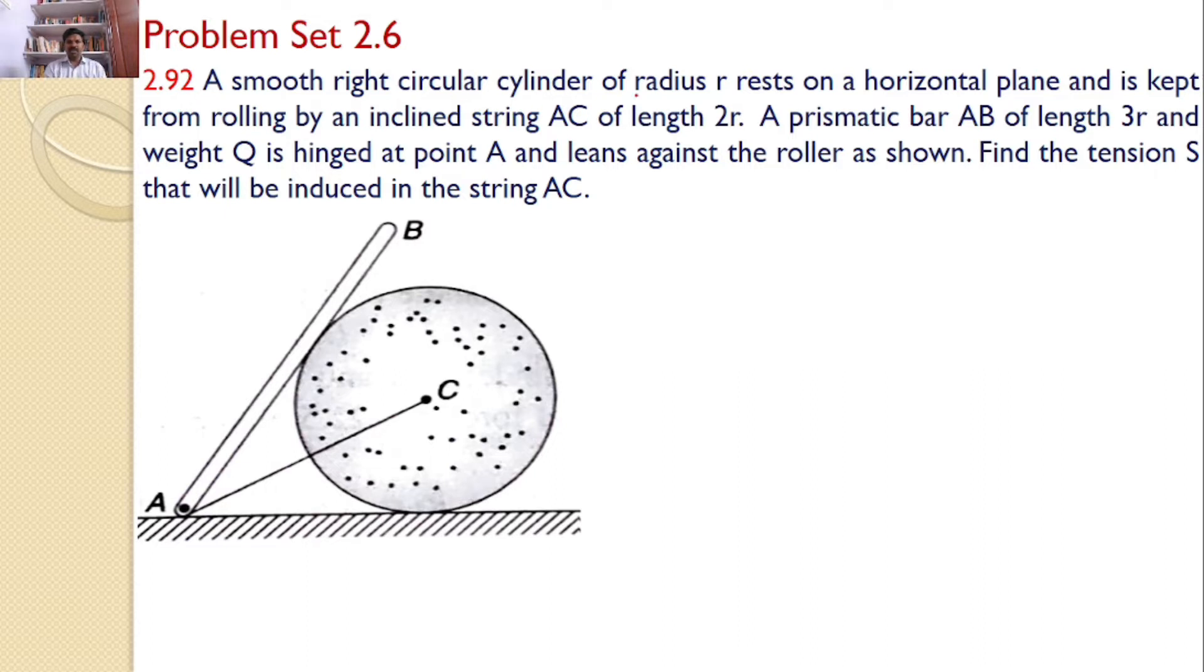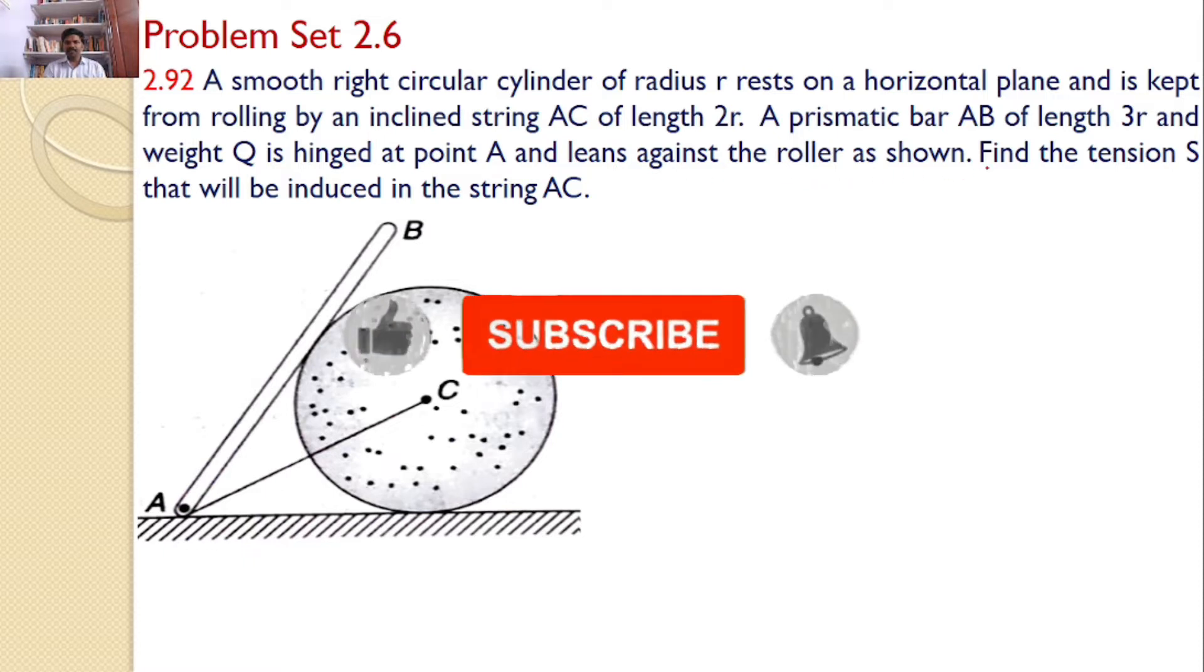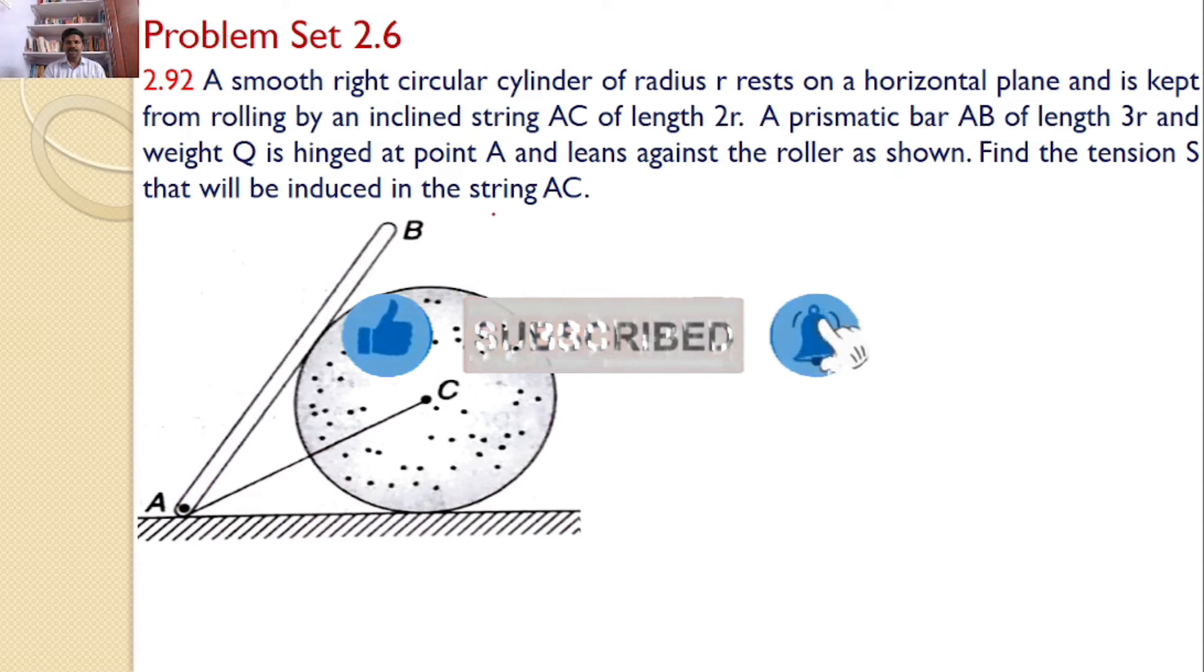A smooth right circular cylinder of radius small r rests on a horizontal plane and is kept from rolling by an inclined string AC of length 2r. A prismatic bar AB of length 3r and weight Q is hinged at point A and leans against the roller as shown. Find the tension S that will be induced in the string AC.